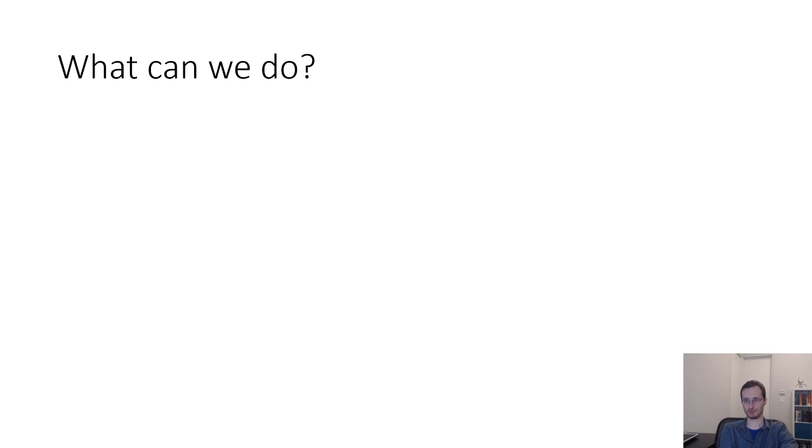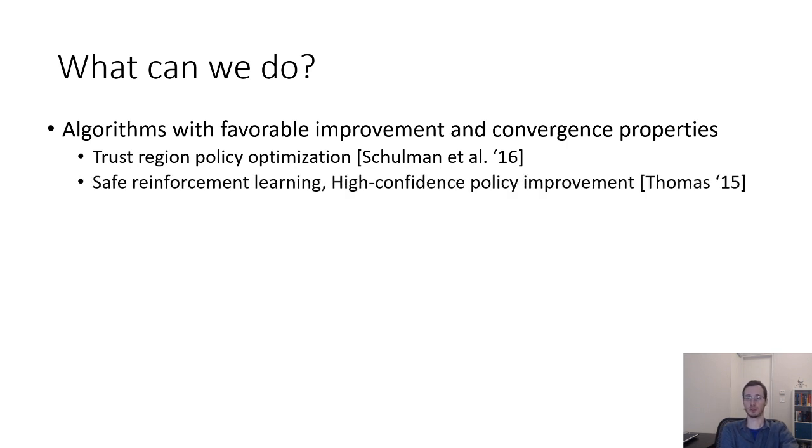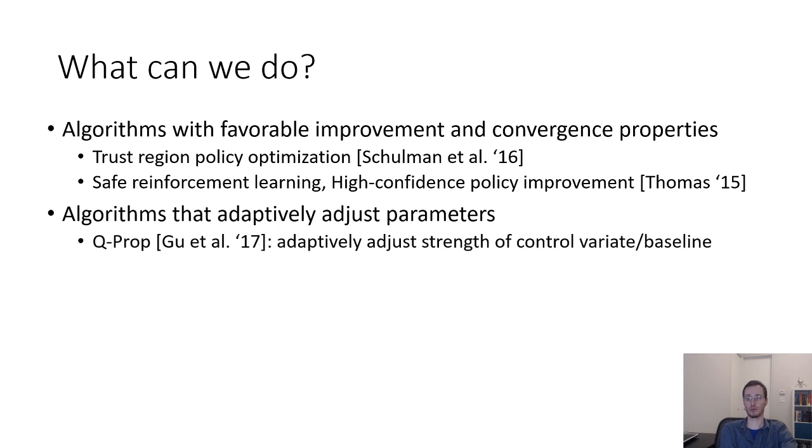So, what can we do? We could try to design algorithms with favorable improvement and convergence properties. For example, some works have attempted to show, at least under some limiting assumptions, that the method can provide, for instance, guarantees of improvement. So, I talked about one such guarantee when I discussed policy gradients, which is based on the trust region policy optimization paper. There's also work on safe reinforcement learning, and high confidence policy improvement. If you are interested in this, you could, for instance, check out some work by Philip Thomas. There are also algorithms that adaptively adjust hyperparameters. For instance, the QPROP paper by Gu et al adaptively adjusts the strength of the control variate baseline based on how well it correlates with the return.